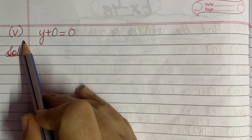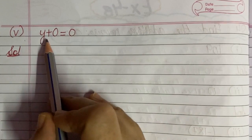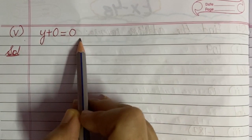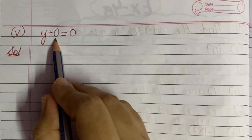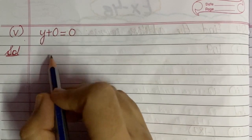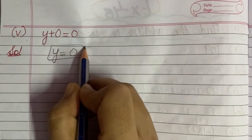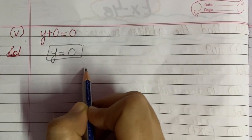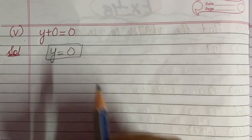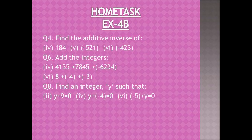Now the fifth part says: y plus 0 equals 0. Since 0 has no value, the value of y will be 0 only. Please pause your video and note down the home task, and for any doubts and queries you can leave your message in the comment box. I hope you liked the video. Thank you.